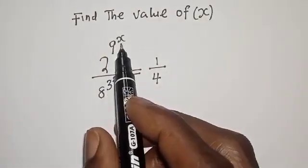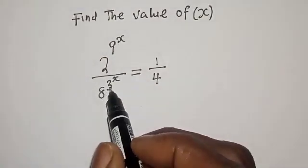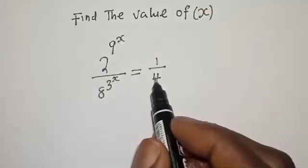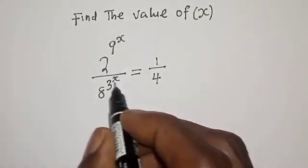2 raised to power 9 raised to power s, divided by 8 raised to power 3 raised to power s, is equal to 1 over 4. What is the value of s?